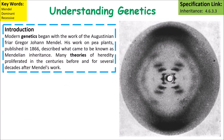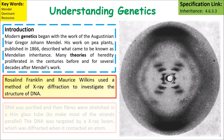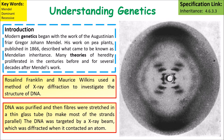Modern genetics began with the work of Gregor Mendel but was continued by a number of people. Rosalind Franklin and Maurice Wilkins used a method called X-ray diffraction to investigate the structure of DNA. DNA was purified, the fibers were stretched out into a thin glass tube, and then bombarded with X-rays. How those X-rays were diffracted gave evidence that the structure of DNA must have been a double helix.